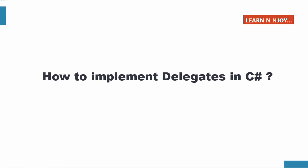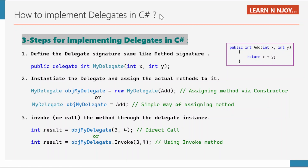How to implement a delegate in C#? There are just three steps by which we can easily implement the delegate in C#. Before going through the steps, let's look at the AddMethod. We are planning to define a delegate that could point to AddMethod. As a part of the first step, we need to define the delegate signature the same as the method signature.